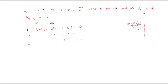Now look at the next question. The Nyquist plot of the open-loop transfer function G(s)H(s) is shown. It is given that G(s)H(s) has one right-hand pole, meaning the open-loop right-hand pole P-plus equals 1. The question is: how does the closed-loop system behave?